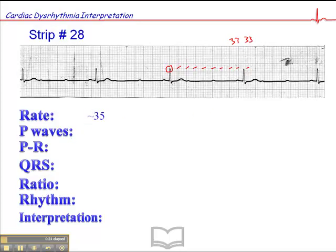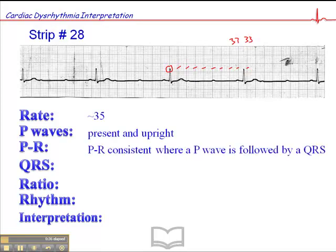The P waves are definitely present, upright, and consistent in morphology. The PR interval is consistent where P waves are followed by QRSs — the PR interval here is identical to the PR interval here, and here, and here. Keep in mind, we don't see that with a third-degree AV block or a second-degree AV block type 1, also known as a Wenckebach block. So we can eliminate both of those right off the bat.